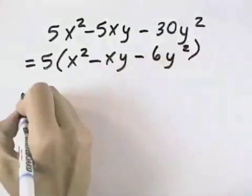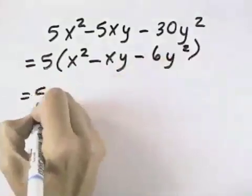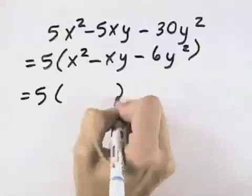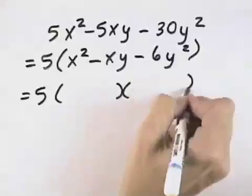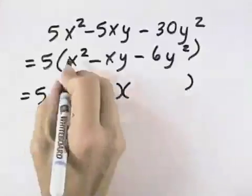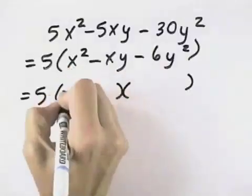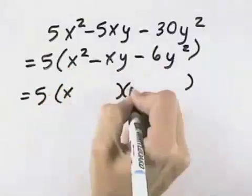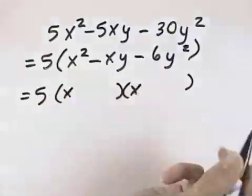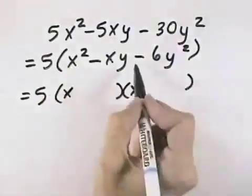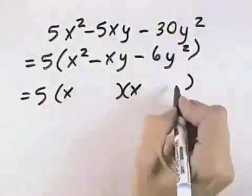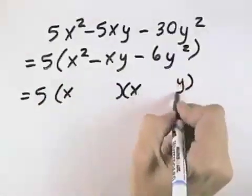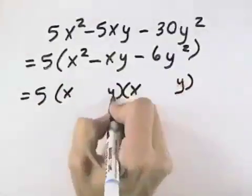Now we've got three terms, which is a trinomial, so we'll set up our parentheses for a trinomial. The first term is easy — to get x squared, that means I need an x in each spot. For the last term, I know I'm going to need a y, but I don't know how many.